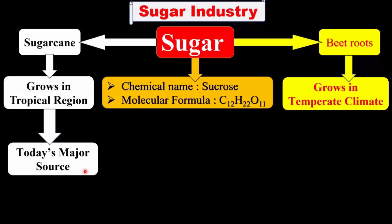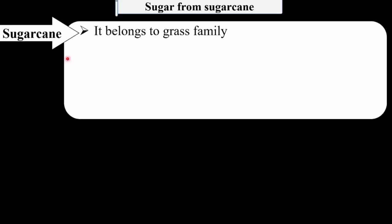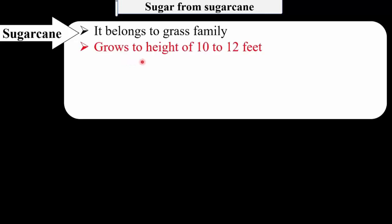Today the major source of sugar is sugarcane. Now we will see details about sugar from sugarcane. This sugarcane belongs to the grass family and grows to a height of 10 to 12 feet.